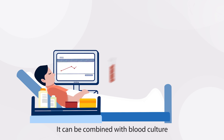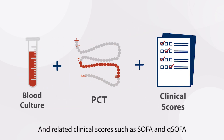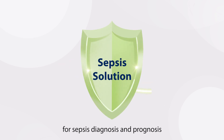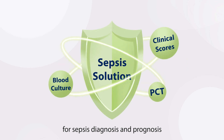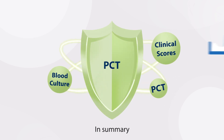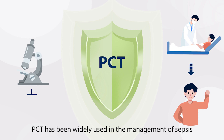PCT is the most ideal biomarker for distinguishing bacterial infection from other non-infectious causes of inflammation. It can be combined with blood culture and related clinical scores such as SOFA and QSOFA for sepsis diagnosis and prognosis. In summary, PCT has been widely used in the management of sepsis.